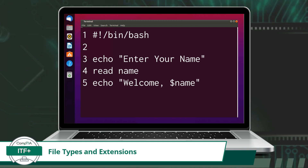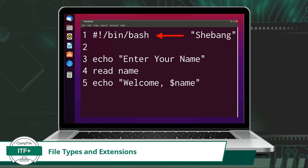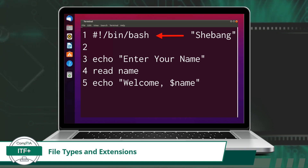However, there's a neat trick called a shebang, that allows scripts to specify which program should be used to open and read the file's contents, directly in the file. For example, if the first line in a script starts with a hashtag followed immediately with an exclamation point, this is a shebang. The shebang will then be followed with the file path leading to the program that should be used to open and read the file's contents. In my example, /bin/bash will call a program known in Linux as the bash shell, to execute the script. Using this shebang provides flexibility and allows developers to create powerful and portable scripts without relying on file extensions.